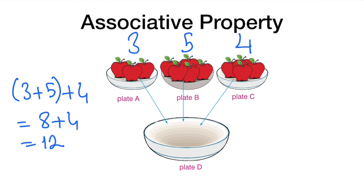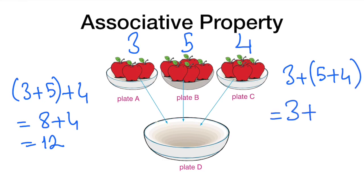which is twelve. What if I start adding the apples on the right — that is, three plus five plus four, but adding five and four first? Five plus four is nine, and three plus nine equals twelve. As you see, the result is the same, and addition has the associative property.